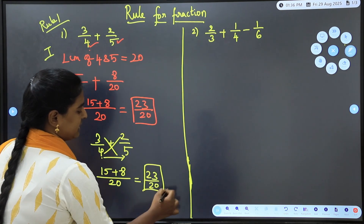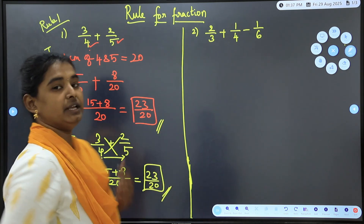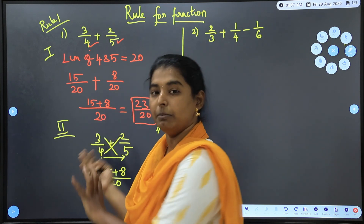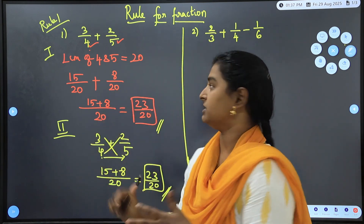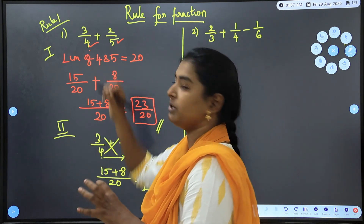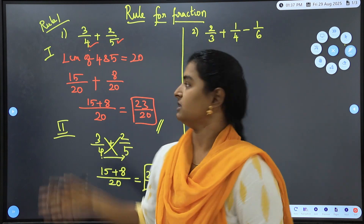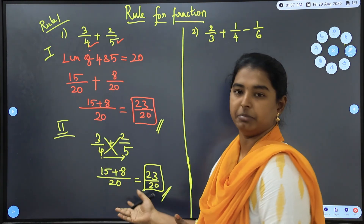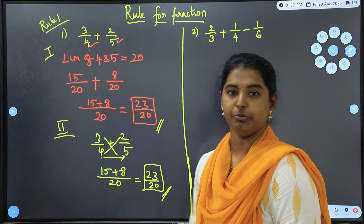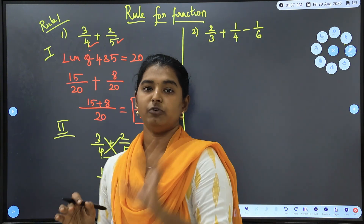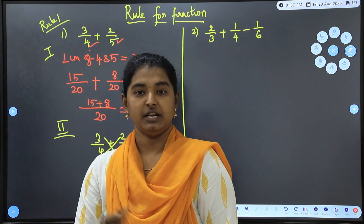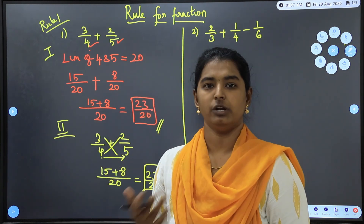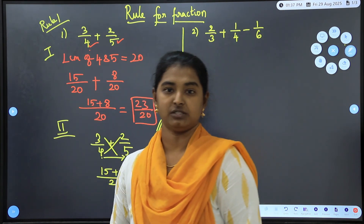Using LCM method or Butterfly method, both give the same answer. You can choose the method depending on the question. If the denominator has larger numbers, use the LCM method. If it has simple numbers, you can cross-multiply. Either way, the rule applies when there is addition or subtraction between two or more fractions.